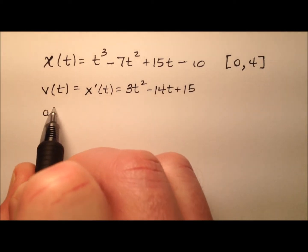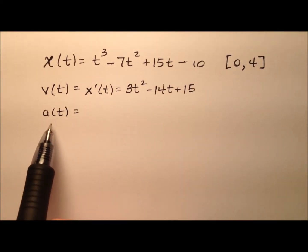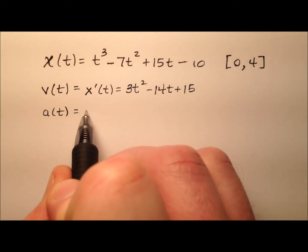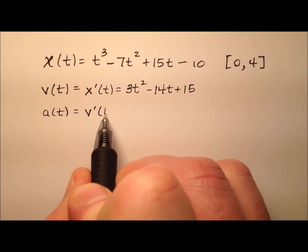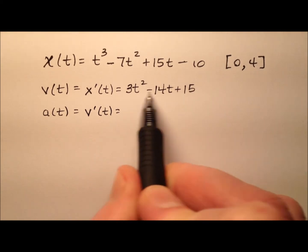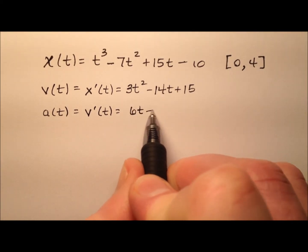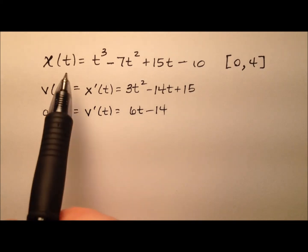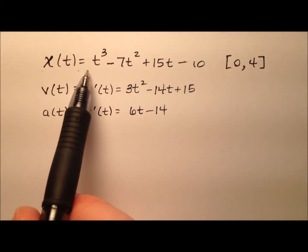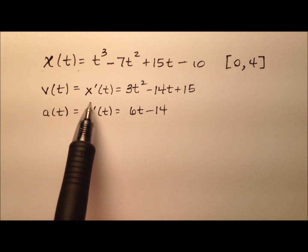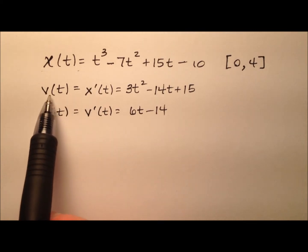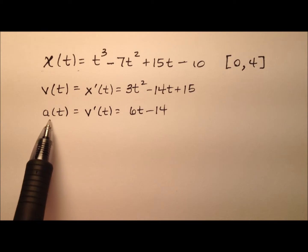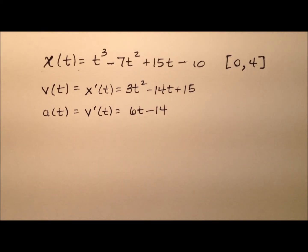Next, let's get a function for our acceleration, a of t. That's just the first derivative of our velocity function. Using the same process, we get 6t minus 14. So we have our position function telling us where the particle is, our velocity function telling us how fast and in what direction it's moving, and our acceleration function telling us what force is being applied — whether it's being pushed to the right or to the left.